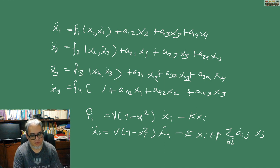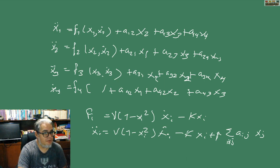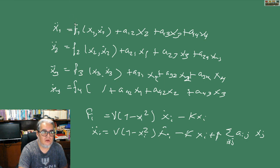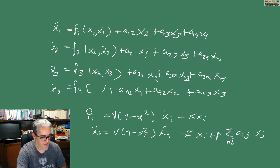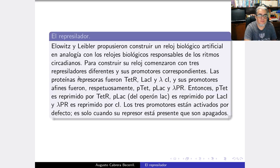That is a bit the idea behind the construction of that coupled oscillator system. Now we are going to talk about the Repressilator. The Repressilator is an artificial biological clock proposed by Elowitz and Leibler.